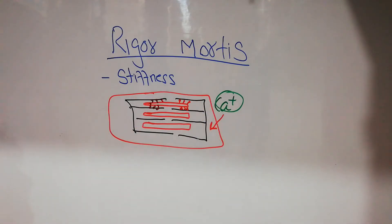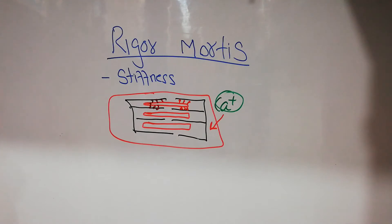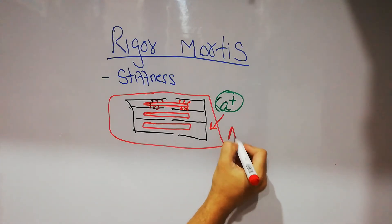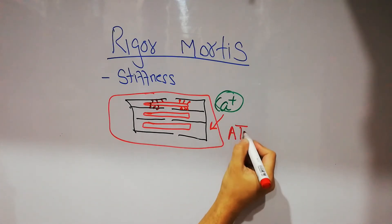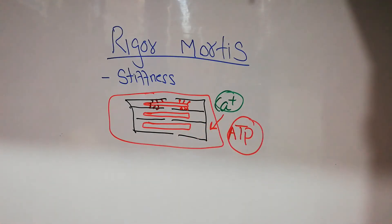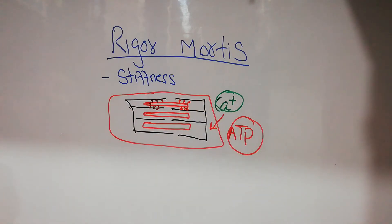Normally, when calcium enters the human body and contraction has occurred, this calcium is removed with the help of ATP. When we are breathing and respiration is going on in the body, ATPs are generated, which are basically a form of energy, and this ATP removes calcium.